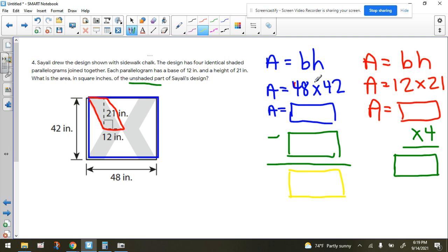Step one is find the area of the blue by multiplying these two numbers together. Step two is find the area of one of the parallelograms by doing 12 times 21. Multiply that number by four to get the area of the shaded parallelograms, because there are four of them.